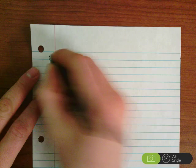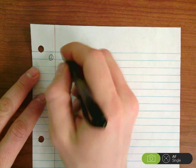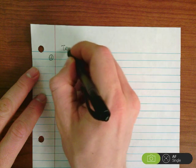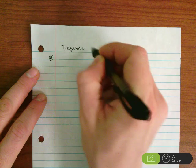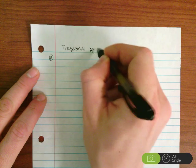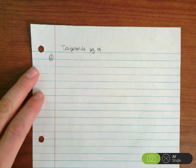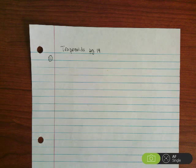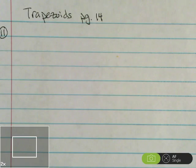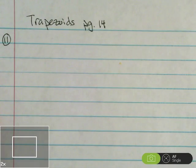We've got number 11 and we'll call this trapezoids page 14. Don't forget that you want to put your name on every page that you turn in.